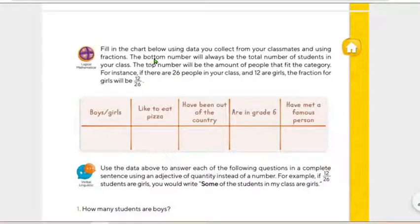Because it says here that the bottom number, el número de abajo, siempre va a ser el número total de alumnos en la clase. Y el número de arriba será el número de personas que cabe en la categoría. Por ejemplo, aquí la categoría es chicas, girls, right? So, si hay 26 personas en tu clase y 12 son chicas, la fracción sería esta, 12/26. ¿Por qué? Son 12 chicas de 26 que hay en el salón.